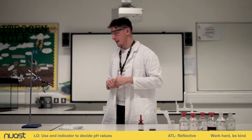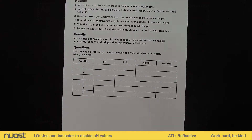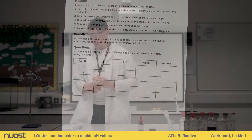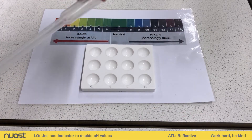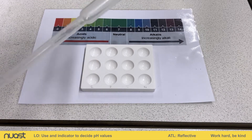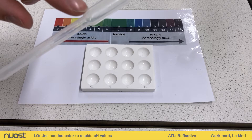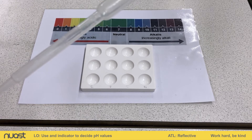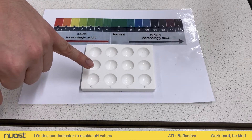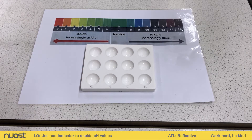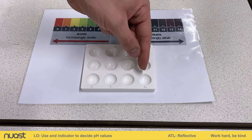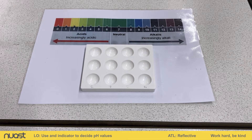Let's have a look at the method. The method says to use a pipette to place a few drops of solution onto a watch glass. We have our dropping pipette here — you are able to measure volumes since it's graduated along the side, but it isn't very accurate. Instead of using a watch glass, we're going to be using a dropping tile so that we can compare the different solutions.